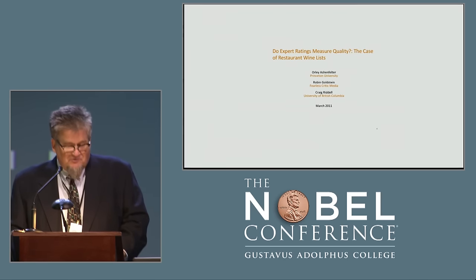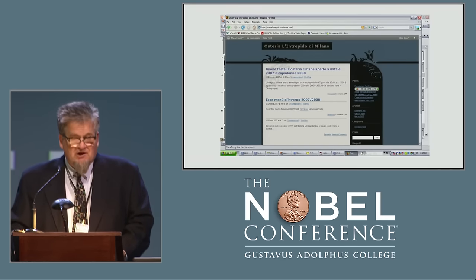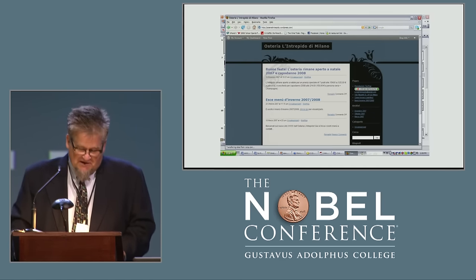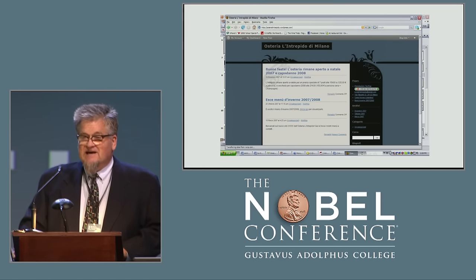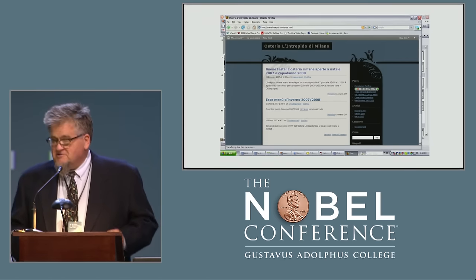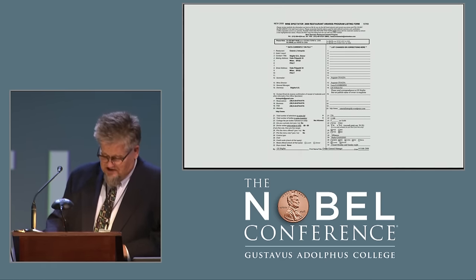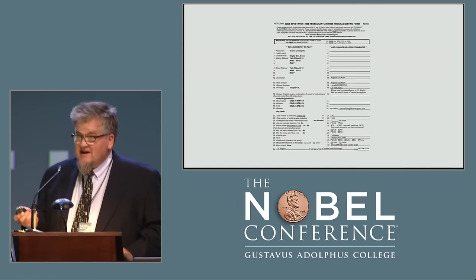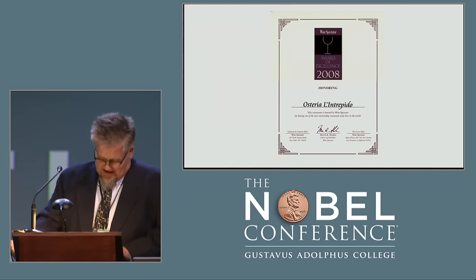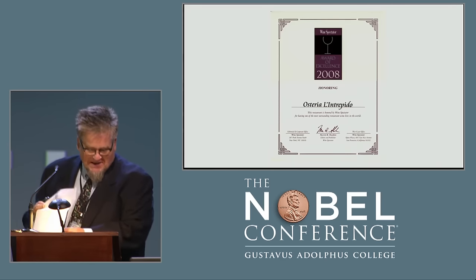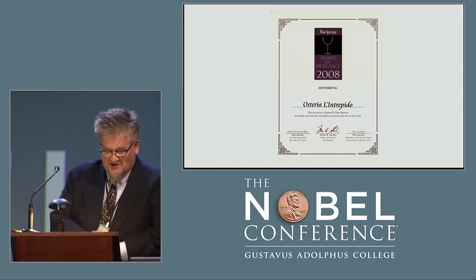The authors invented a fictional restaurant in Milan, Italy — Osteria e l'Antrepido. The only real thing about this restaurant was a working telephone number. The menu was ordinary, and the wine list consisted of Italian wines that Wine Spectator itself had given its lowest ratings to over the previous years. The authors submitted their entry along with a $250 fee to Wine Spectator and waited. Of course, they won a 2008 Wine Spectator Award of Excellence — demonstrating that the award had no informational value to customers, but great financial value, to the tune of about $4 million in entry fees, to Wine Spectator magazine.